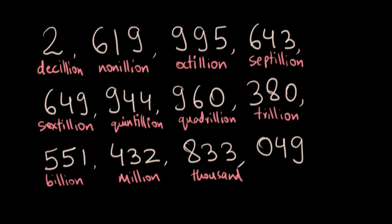Well, my favorite conversation with a mega number is this thing. Let me introduce my friend here. We have 2 decillion, 619 nonillion, 995 octillion, 643 septillion, 649 sextillion, 944 quintillion, 960 quadrillion, 380 trillion, 551 billion, 432 million, 833,049. Phew! The fact that this number has 34 digits isn't at all the exciting part. Every number is an answer to a number of questions. And I think that these questions are what make the numbers interesting.